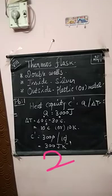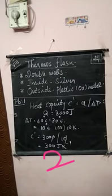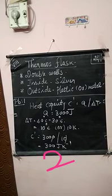Applying the values into the formula: C' = Q / ΔT = 3000 joules / 10 degree Celsius. Since 10 degree Celsius equals 10 Kelvin, C' = 3000 / 10 = 300 joules per Kelvin. That is the answer.